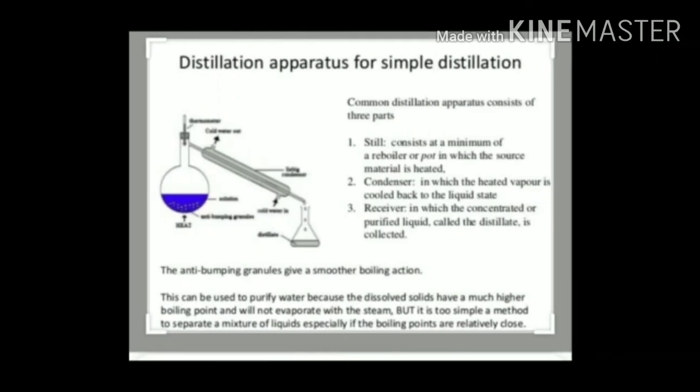Method 5: Separating two miscible liquids — simple distillation. Two miscible liquids can be separated by simple distillation: the liquid is heated to its boiling point, converted to vapors, and on cooling the pure liquid is collected separately. The apparatus consists of a distillation flask connected to a condenser. The liquid with the lower boiling point vaporizes first and passes through the condenser, where it gets condensed. Water is passed through the condenser to cool the vapor, and the component with the lower boiling point is collected in the receiver.